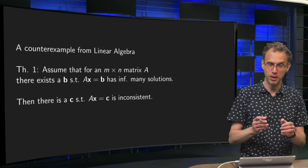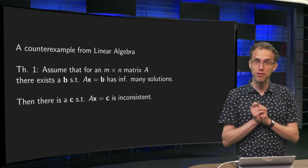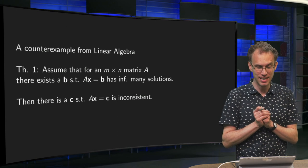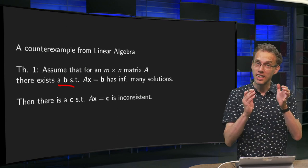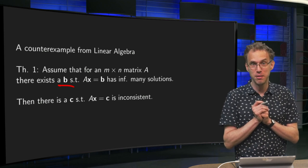We had the following theorem. Suppose we have some M times N matrix A, and we know that there exists some B such that Ax = B has infinitely many solutions.